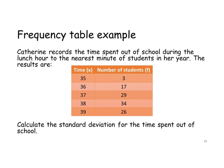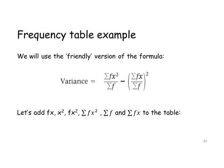Let's look at an example. Catherine records the time spent out of school during the lunch hour to the nearest minute of students in her year. We have a frequency table where the time x is in the left column and the number of students in the right column — so three students spent 35 minutes outside of school, and so on. Calculate the standard deviation for the time spent out of school. We'll use the friendly version of the formula, so we're going to need to find f times x, f times x-squared, the sum of f times x, the sum of f times x-squared, and the sum of f.